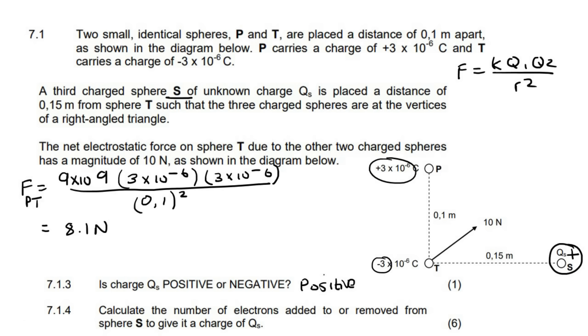So check this out, guys. If we know that T is over here, we know that it is being pulled upwards by P. This is the force of P. We know that it's being pulled to the right by S. So this would be the force of S. And we know that the overall effect is 10 newtons. We also know that the force of P is 8.1 newtons. So we can use Pythagoras now to go and work out this. And we know we can use Pythagoras because they said that it's forming the vertices of a right angle triangle.